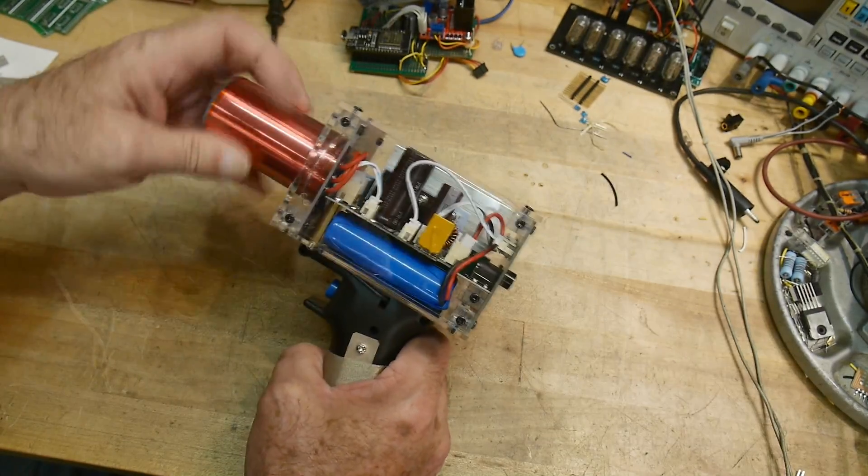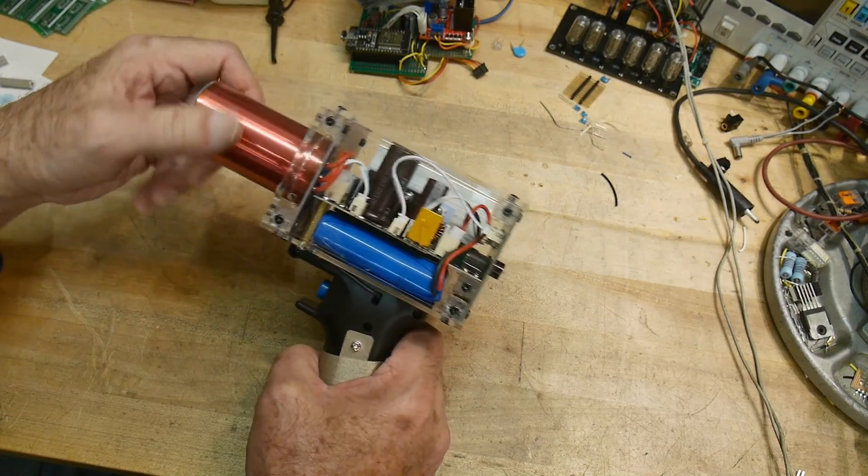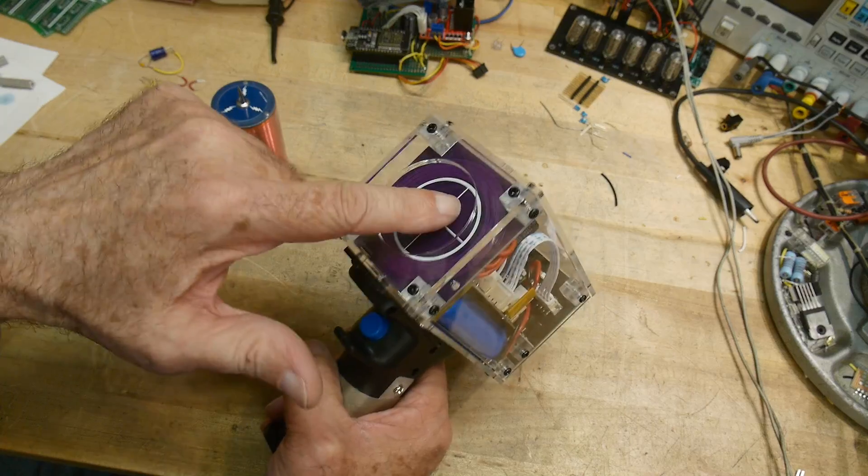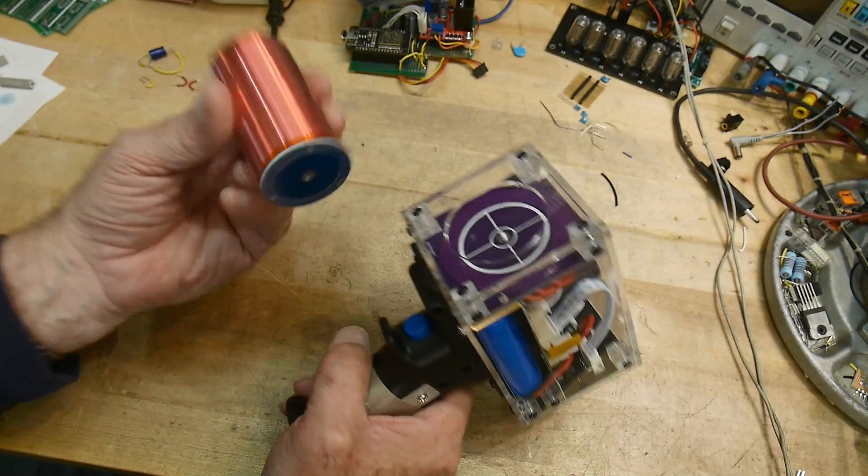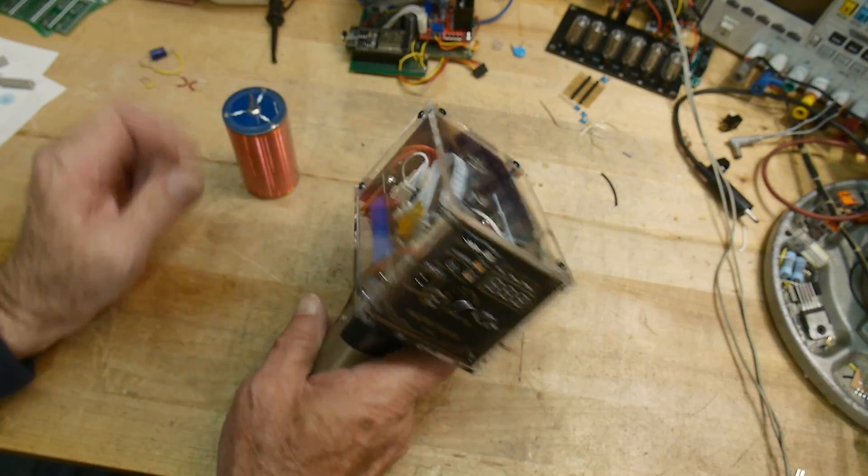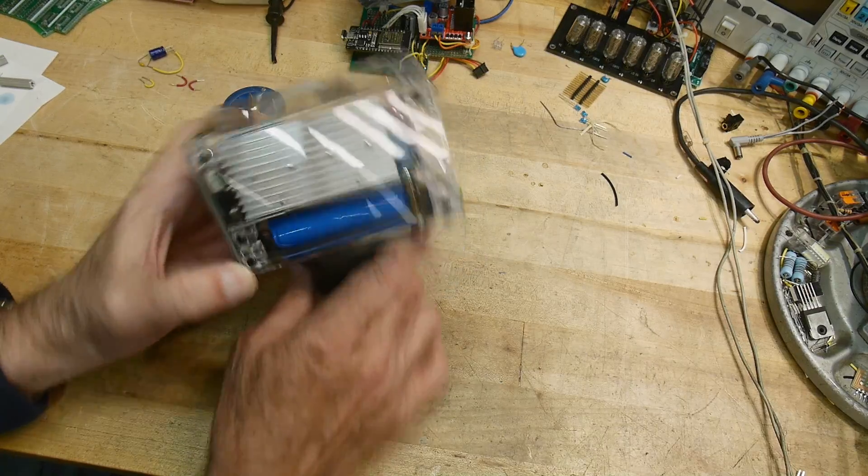So when I store it, I always make sure I undo this thing because it's not going to hurt you touching here. It's only after it goes through the transformer there.